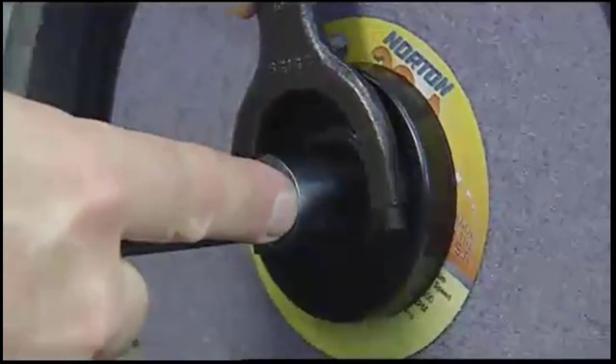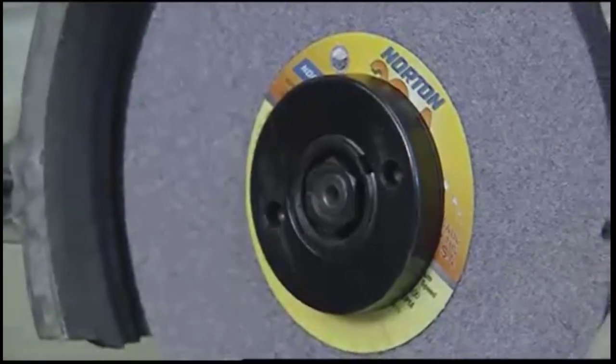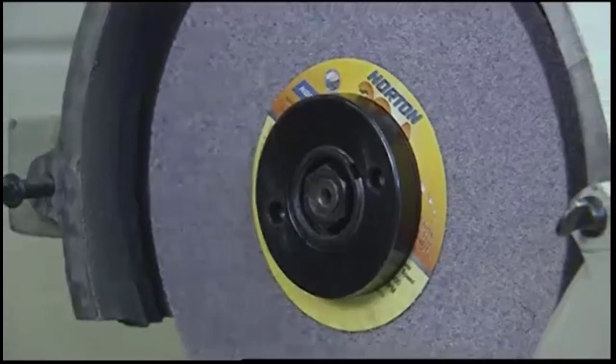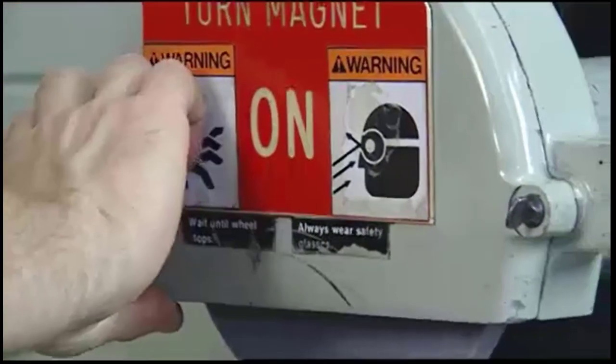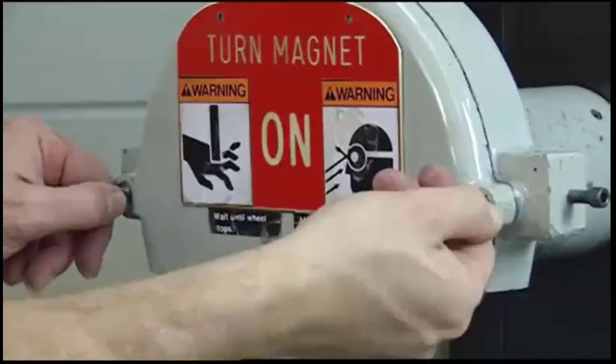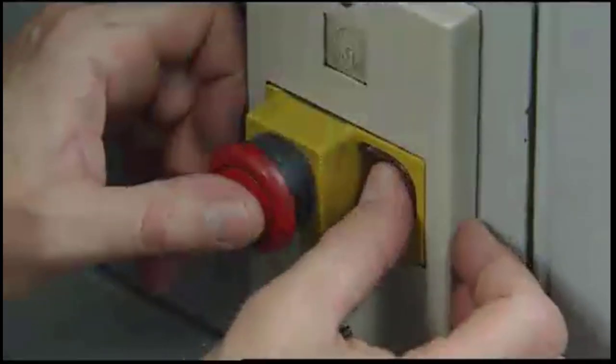Next, tighten with the appropriate wrench, keeping in mind that the nut and spindle have left-hand threads. Once the spindle nut has been tightened, close or replace the wheel guard.